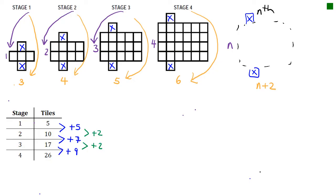To get the area of the rectangles, I multiply the two dimensions: N times N plus 2, and not forgetting the plus 2 for the top and the bottom. Multiplying this out gives N squared plus 2N plus 2. I have 1N squared, which is correct because my second difference was 2, so I was expecting 1N squared — which is exactly what I have.